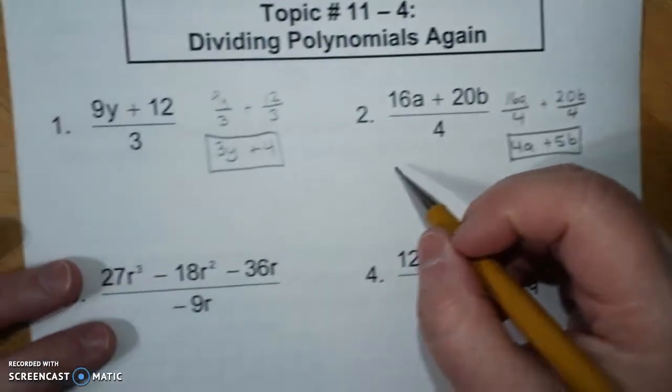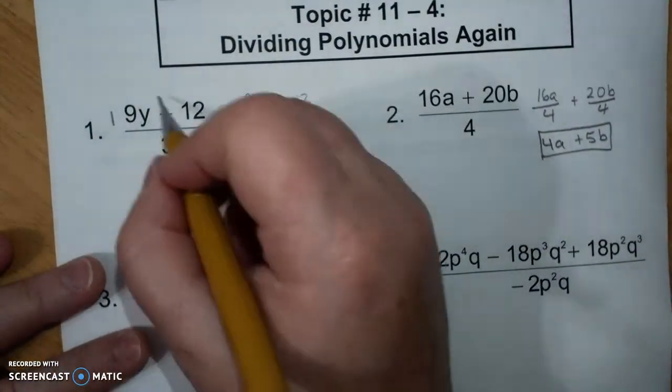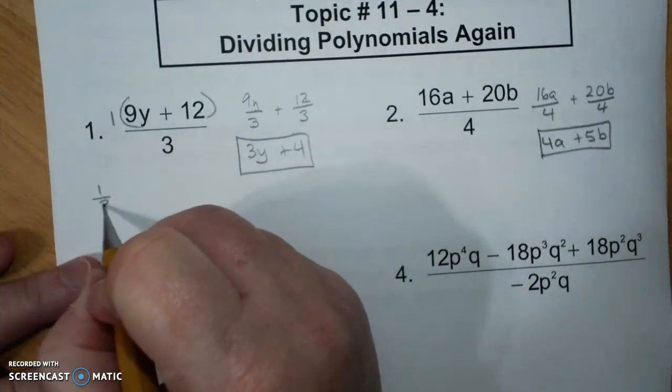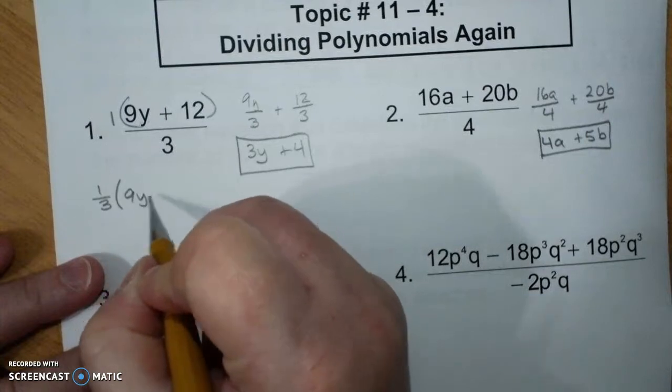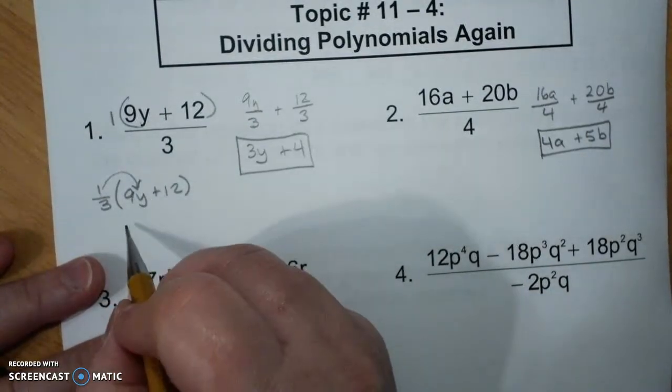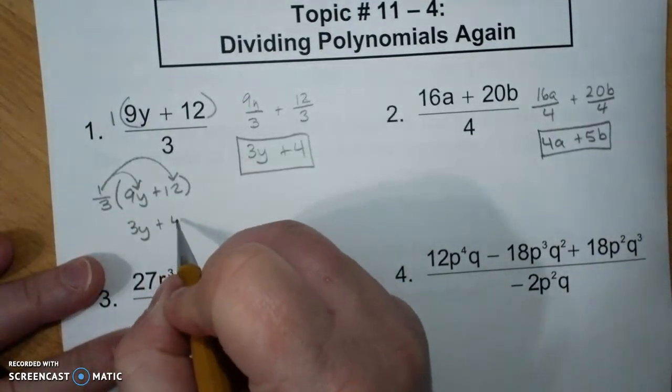Now, what is happening is I can always put a 1 right there. I can put a parenthesis right there. I can say 1 third times 9y plus 12, and 1 third times 9y is 3y, and 1 third times 12 is 4.